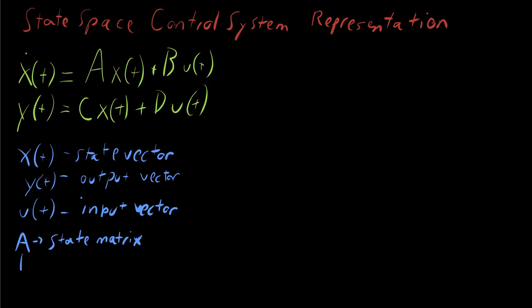B is our input matrix. This defines how the input vector contributes to the change in x of t.